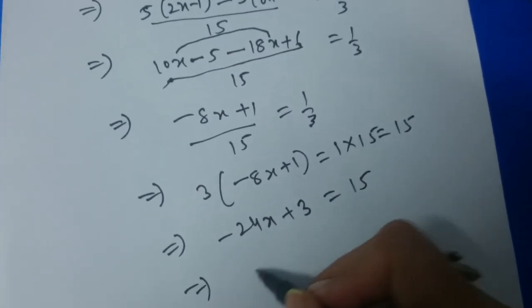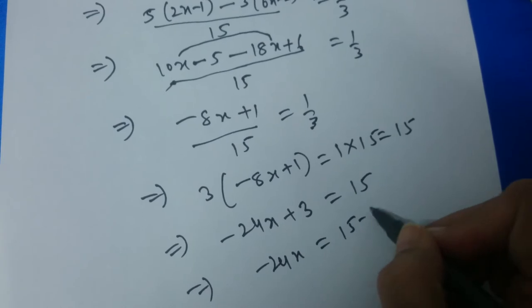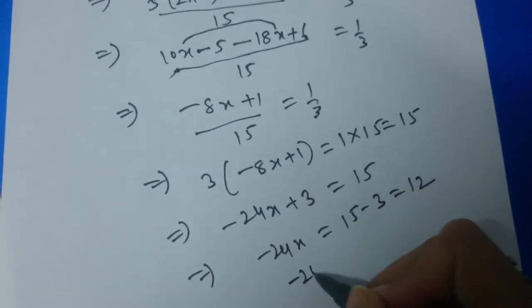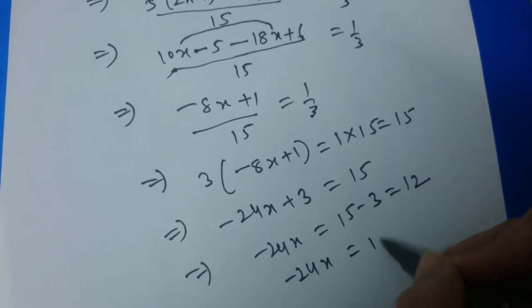This implies minus 24x is equal to 15 minus 3 which is 12. So we have minus 24x is equal to 12.